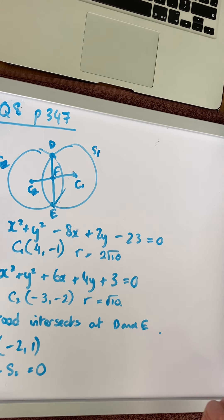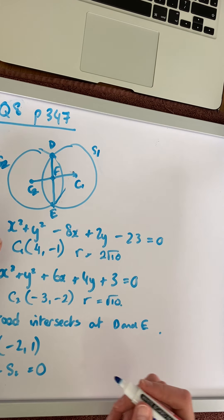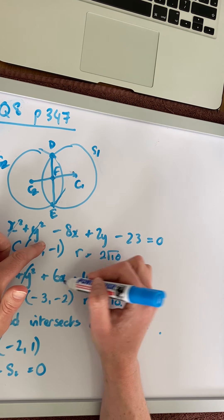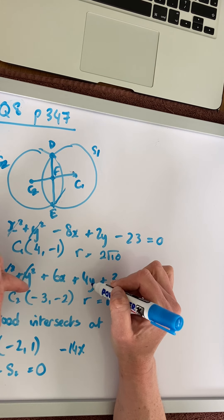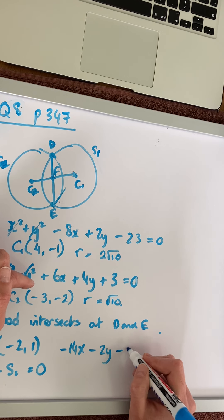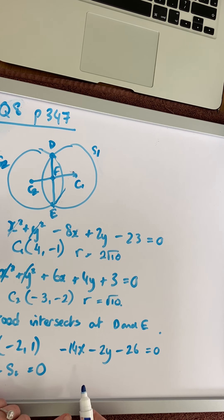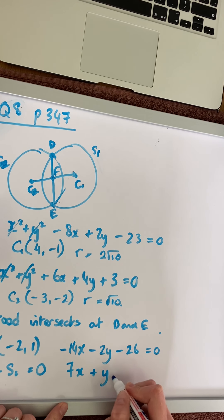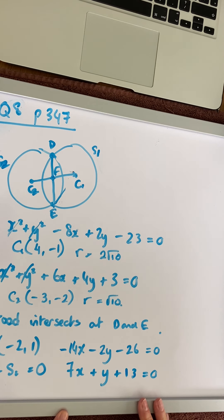The easiest option is S1 minus S2 equals 0. The x² and y² terms cancel out, giving us -8x - 6x = -14x, then 2y - 4y = -2y, and -23 - 3 = -26, all equal to 0. Dividing across by -2, we get the equation 7x + y + 13 = 0. That's the easiest way to answer part B.